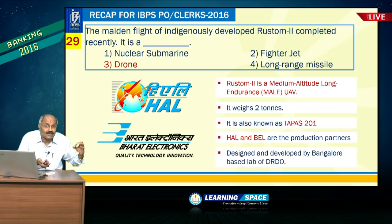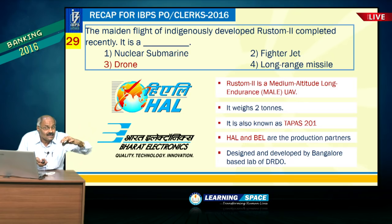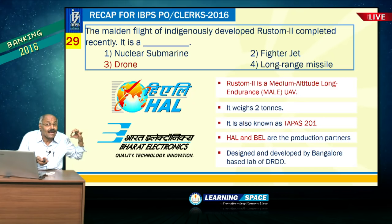Maiden flight of indigenously made Rustam-2. Rustam is also known as TAPAS — it is a drone, specifically a Medium Altitude Long Endurance Unmanned Aerial Vehicle, manufactured by HAL and BEL.